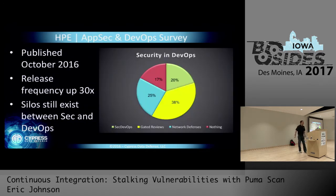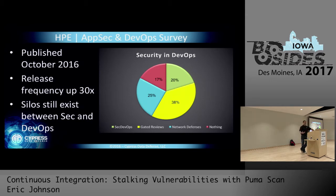Let's take a peek at an HPE survey on how application security and DevOps are being commingled. Published in October 2016, the release frequency is up 30 times in a DevOps environment — we're pushing code much more often. The problem is that silos between AppSec and development still exist. In this survey, 17% of organizations doing DevOps are doing nothing for security in their DevOps pipelines, which is very concerning — we've taken a problem that at least gave us a chance to catch with a gated release and now we've removed that gate, freely pushing vulnerabilities into production.